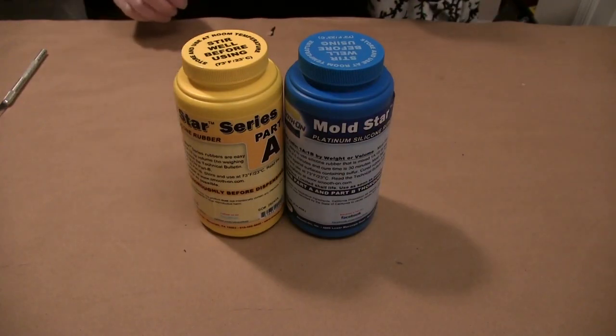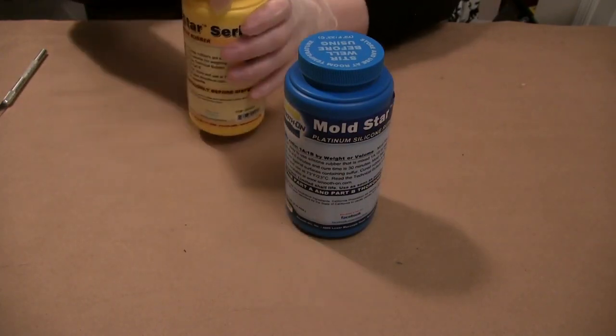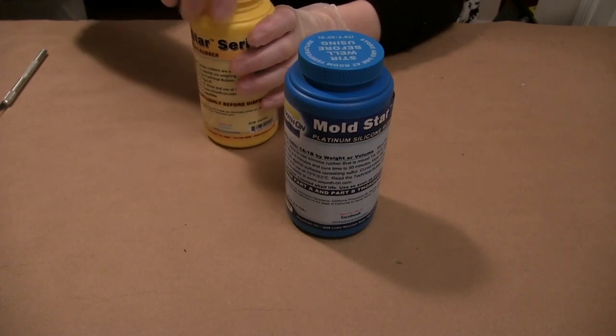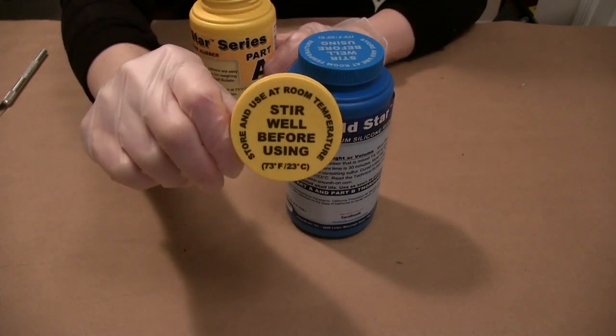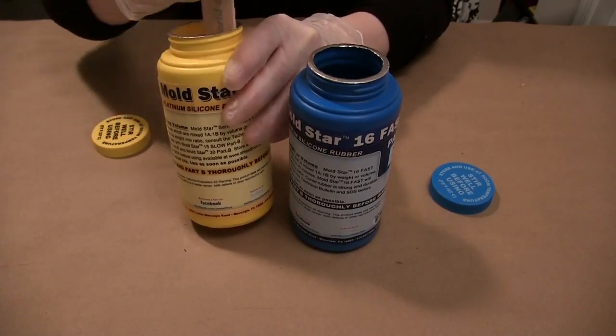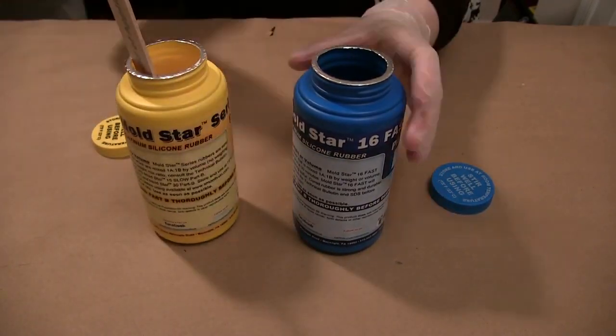The material that I'm using for this project is Mold Star 16 Fast. Now I'm going to show you the lid here in a second because it is very important to pre-mix and stir each the side A and B before you get started.